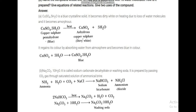Na2CO3·10H2O has 10 water molecules of crystallization and is called sodium carbonate decahydrate. It is prepared by passing CO2 gas through brine. The first reaction is: NH3 + H2O + CO2 + NaCl → NaHCO3 + NH4Cl. NaHCO3 formed is sodium hydrogen carbonate, which is baking soda.